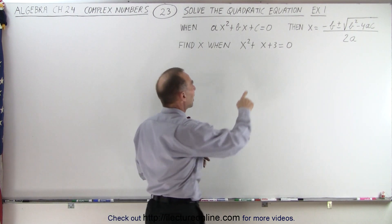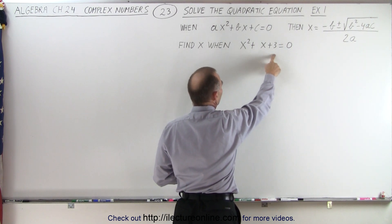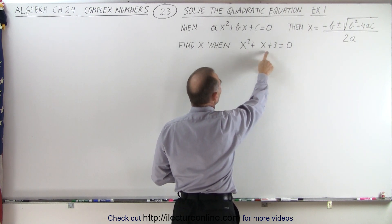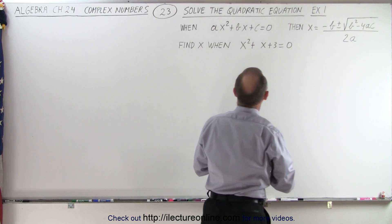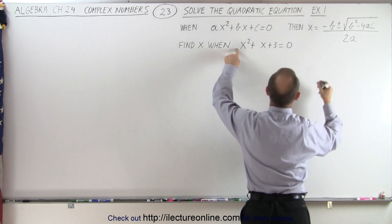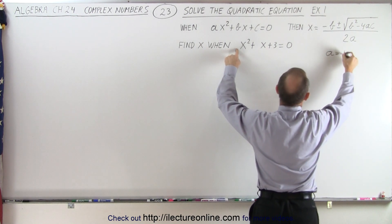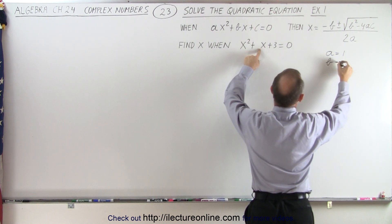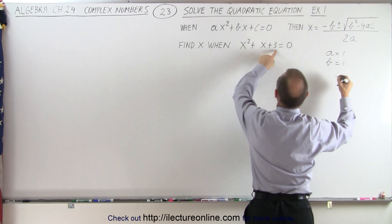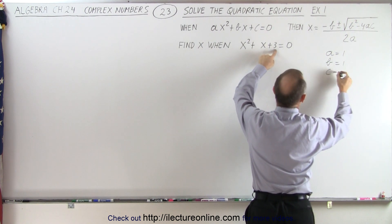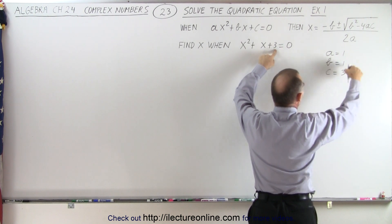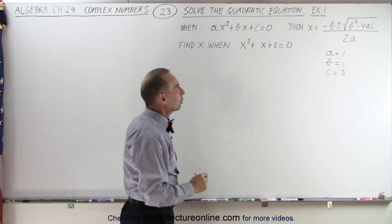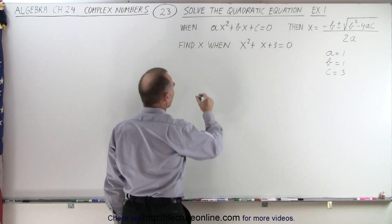So here we have x squared plus x plus 3, and we have to recognize what a, b, and c are. In this case, a is the coefficient of x squared, so a equals 1. b is the coefficient of x, so b equals 1. And c is the constant, so c equals 3. We'll plug those three values into our quadratic formula.